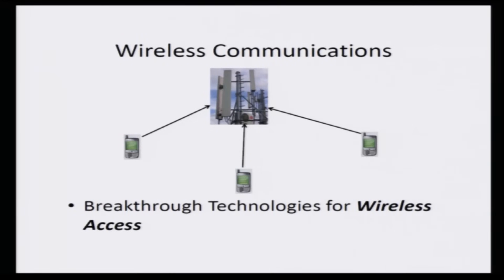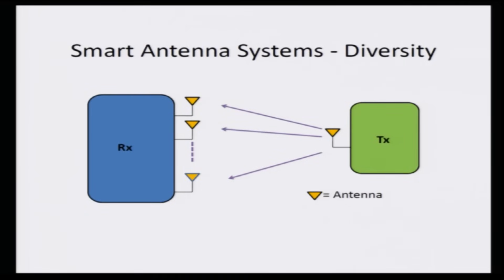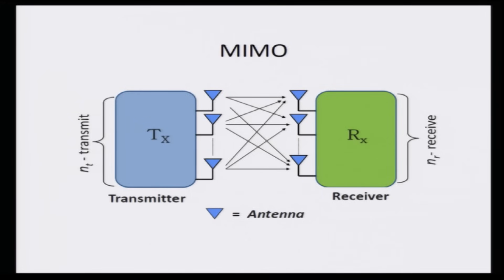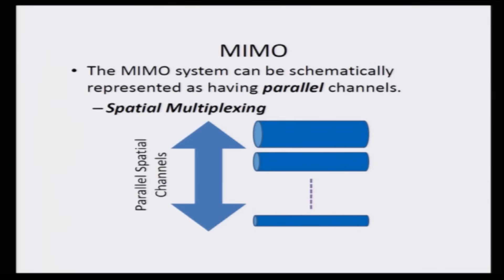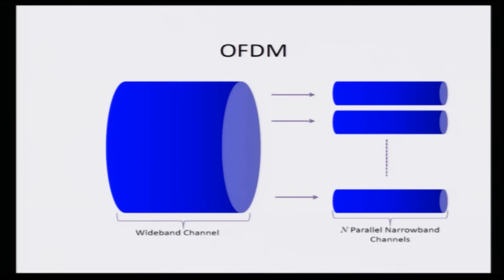This has been made possible through the development of breakthrough wireless technologies. First, wideband CDMA, based on code division multiple access, where an orthogonal code is assigned to each user to transmit data. Second, smart antenna systems, where multiple antennas at the transmitter or receiver better channel energy from the transmitter to the receiver, enhancing signal-to-noise power and signal quality at the receiver. Third, MIMO — multiple input multiple output — systems with multiple antennas at both transmitter and receiver, enabling transmission of multiple information streams in parallel over the wireless channel, a feature termed spatial multiplexing. Finally, OFDM — orthogonal frequency division multiplexing — which converts a wideband, intractable wireless channel into a set of parallel narrowband channels, allowing multiple streams of information to be transmitted in parallel.